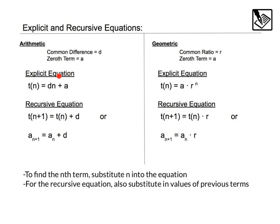For our explicit equation, we know arithmetic equations are linear, so this looks like y equals mx plus b. In this case, t(n) equals the common difference times the term number plus the zeroth term. For a recursive equation, we use t(n+1) to represent the next term, and that equals the previous term plus the common difference. A different way to write a recursive equation is a(n+1) equals a(n) plus d. You could see recursive equations either way.